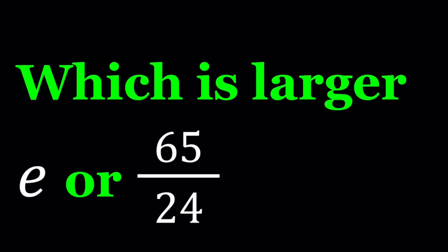Hello everyone. In this video, we're going to be comparing two numbers. One of them is a rational number, 65 over 24, and the other one is a very irrational number. Let's go ahead and see how we can compare these two numbers.